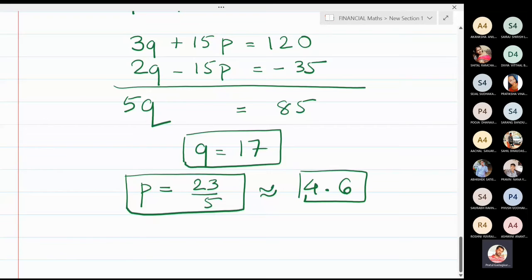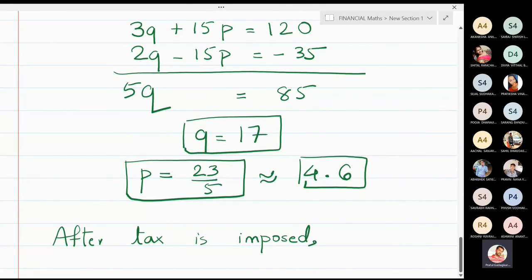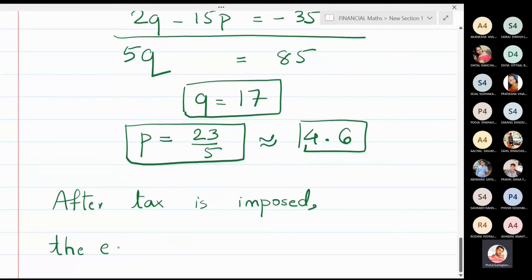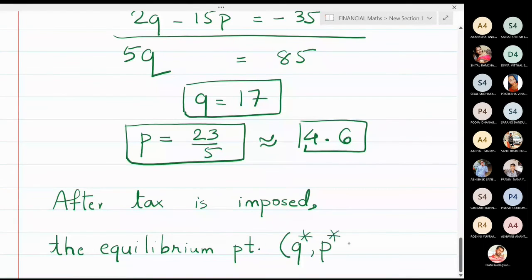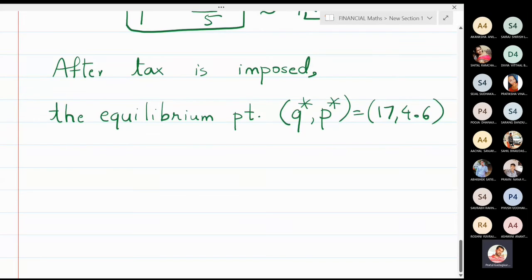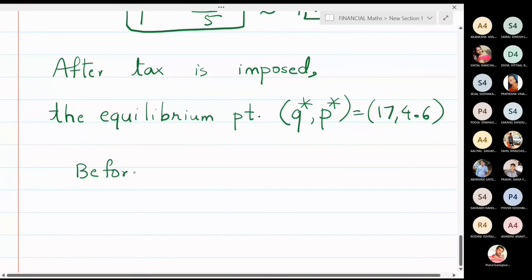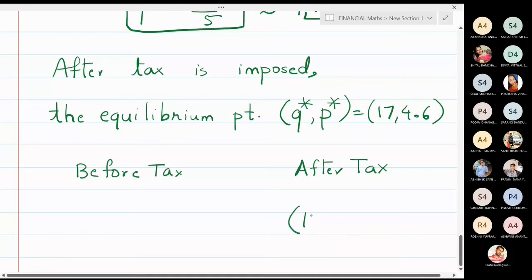After the tax is imposed, solving the equations gives the new equilibrium point (Q*, P*) = (17, 4.6). So before tax: (20, 4), and after tax: (17, 4.6).